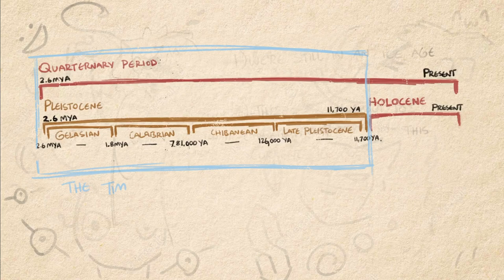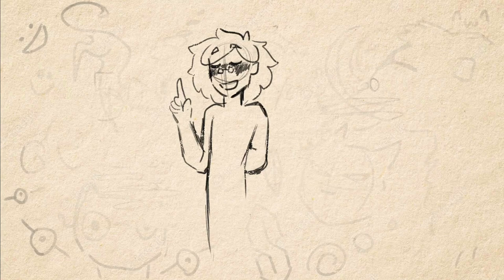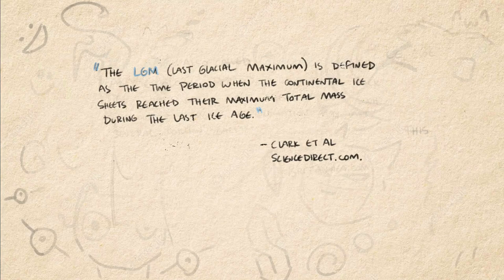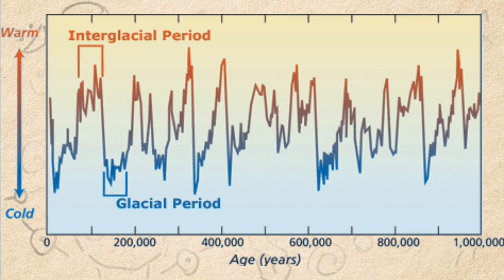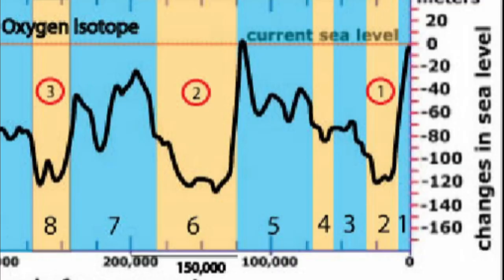The actual definition of an ice age is just when there are glaciers on the Earth's poles, which we still definitely have today. What we call 'the ice age' was just a point in time when those glaciers spread across more of the planet and the temperature got a lot colder — that is actually called a glacial. And when that ice receded back to the poles and the world got warmer, like it did 11,700 years ago, we call that an interglacial. The last glacial period started 110,000 years ago and ended about 15,000 years ago, spanning over pretty much the entire late Pleistocene timeline.